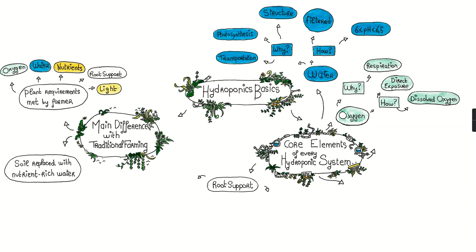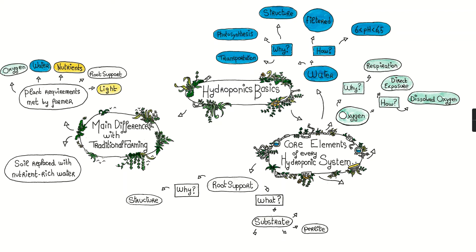The root support will be the structure to which the roots attach themselves. Common materials, also called substrates, used for this are perlite, coco coir, rock wool, and a bunch of others.